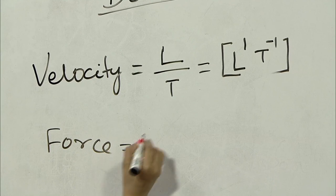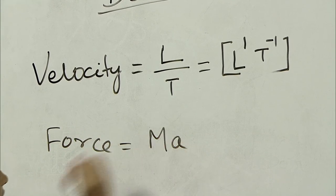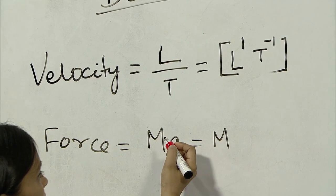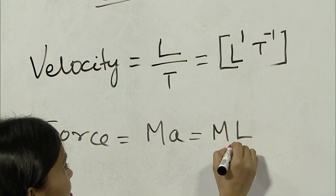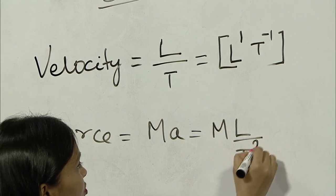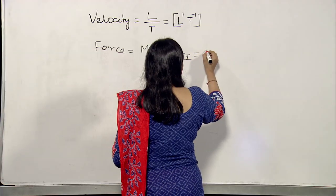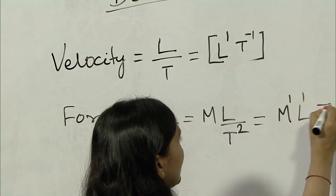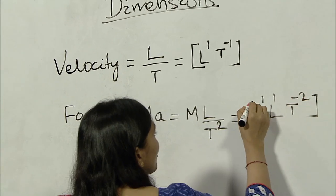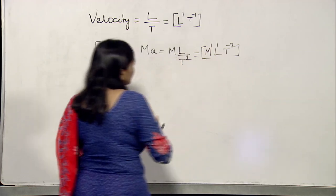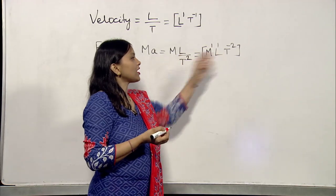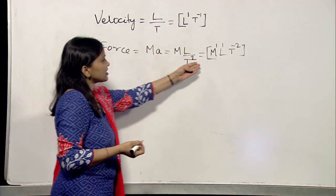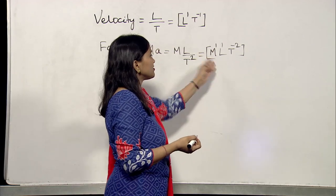For force: force is mass into acceleration. That is mass, and acceleration is length divided by time square. So you can write this M to the power 1, L to the power 1, and T to the power minus 2. So you can represent all physical quantities in terms of mass, length, time, temperature and current and express the dimension of all physical quantities like this.